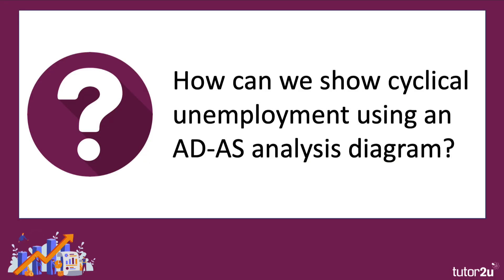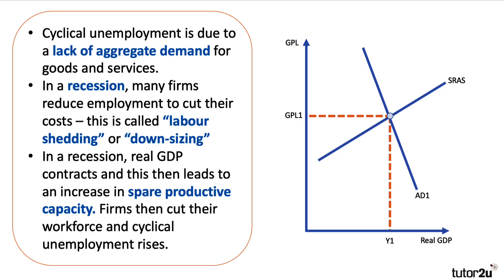How can we show cyclical unemployment using an aggregate demand-aggregate supply analysis diagram? Cyclical unemployment is due to an economy going into a recession or slowdown where there's a fall in aggregate demand for goods and services. And if we have a recession, which is worse than a slowdown, many businesses will look to control their costs by cutting their workforce. This is called labour-shedding or downsizing. In a recession, GDP contracts, and this leads to a fall in employment and an increase in spare productive capacity. Firms then reduce the size of their employment and payroll, and cyclical unemployment tends to go up.